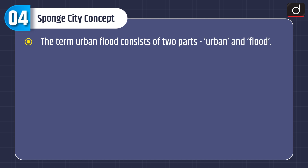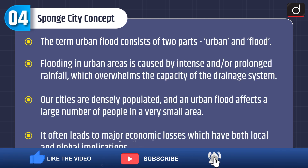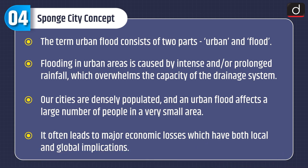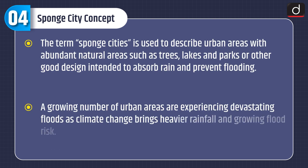The sponge city concept relates to urban flooding. Flooding in urban areas is caused by intense or prolonged rainfall that overwhelms the capacity of the drainage system. Since cities are densely populated, an urban flood affects a large number of people in a very small area, often leading to major economic losses with both local and global implications.